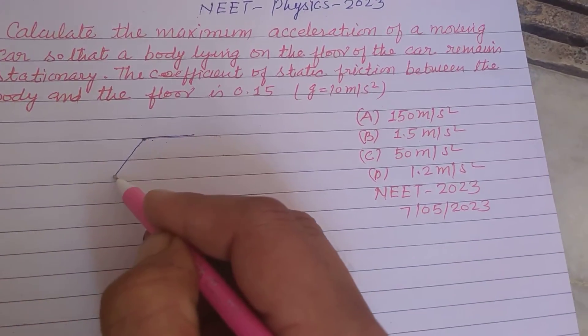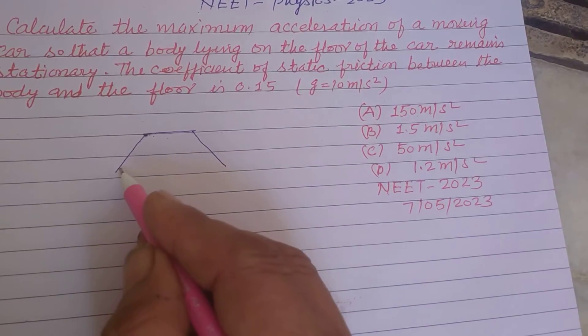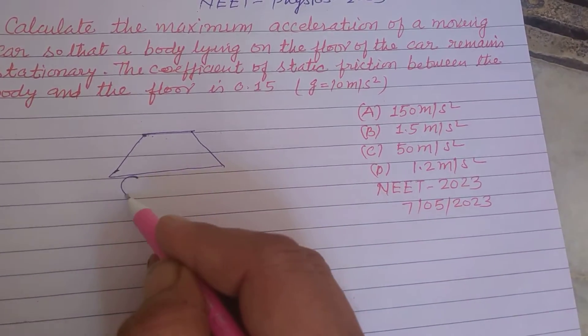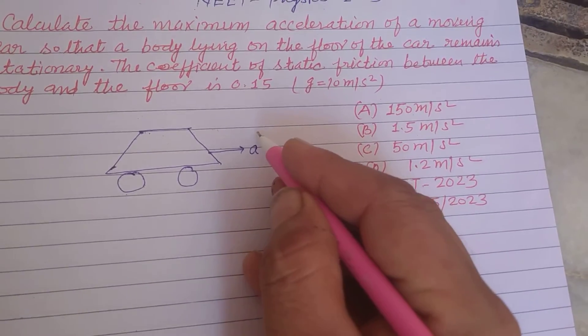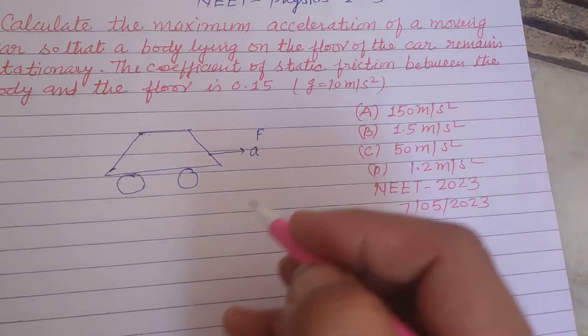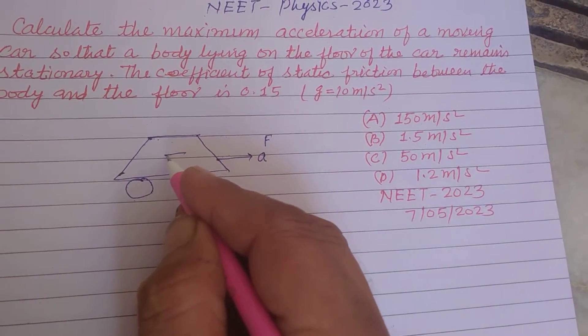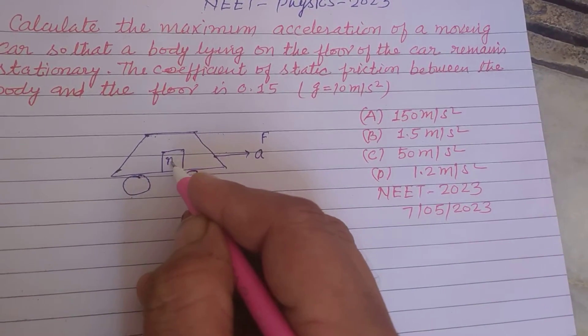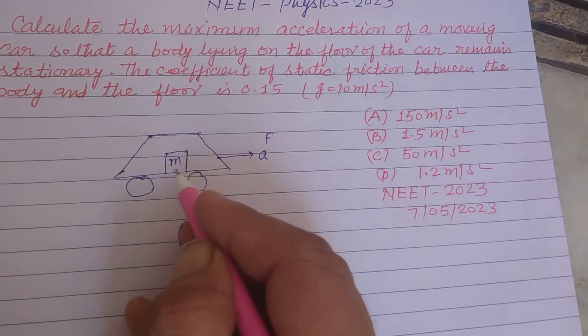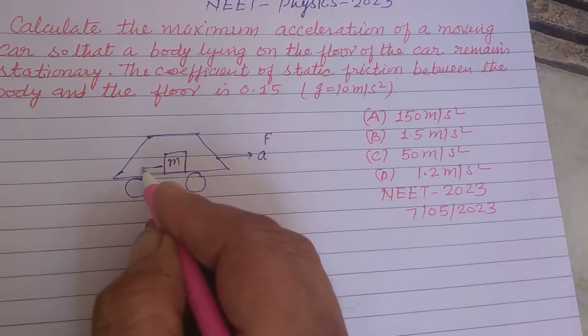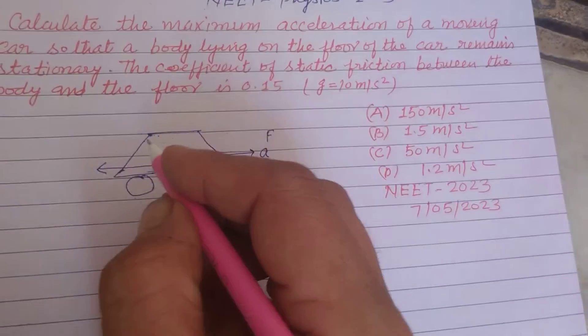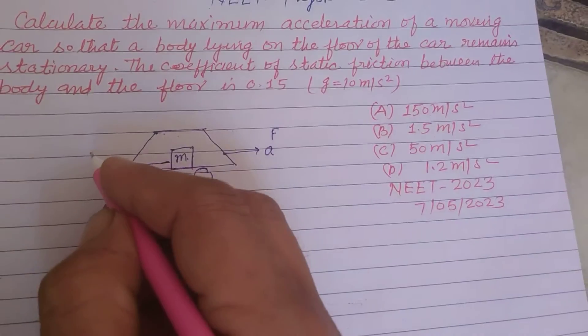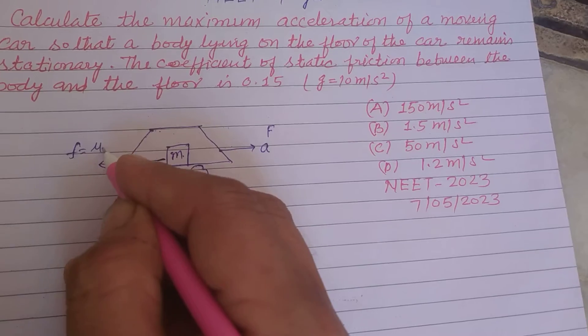Here is a car which is moving with an acceleration a, so a force f acts, and a body of mass m is put inside on the floor of this car, and the coefficient of friction between the floor and the body is 0.15.